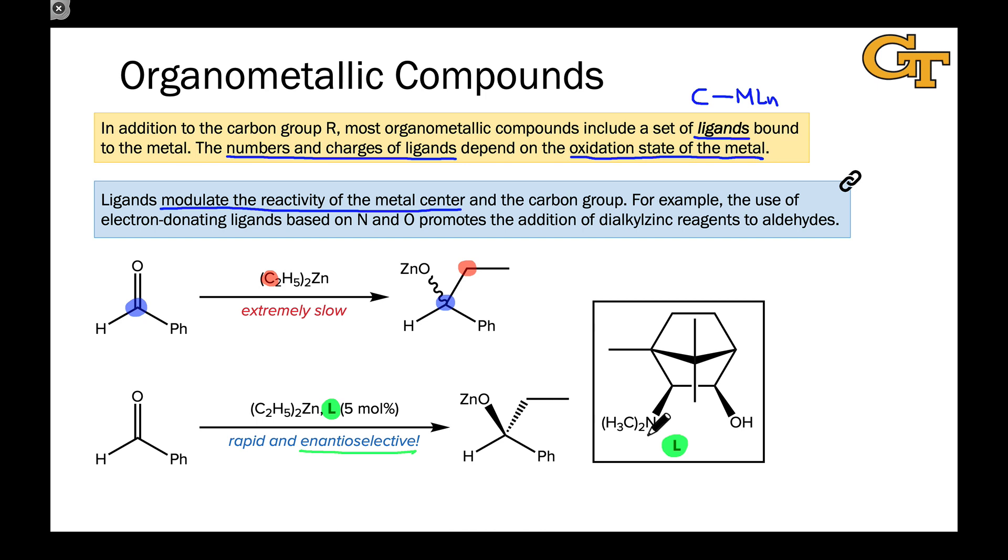If we look at the structure of the ligand, this is a fairly electron-rich ligand with a nice Lewis base in the nitrogen atom and a potential Lewis base in the oxygen atom as well, and both of these can actually coordinate to the zinc atom.